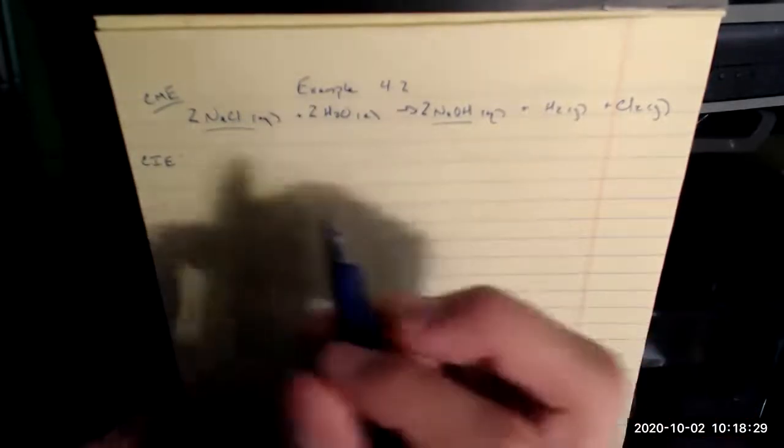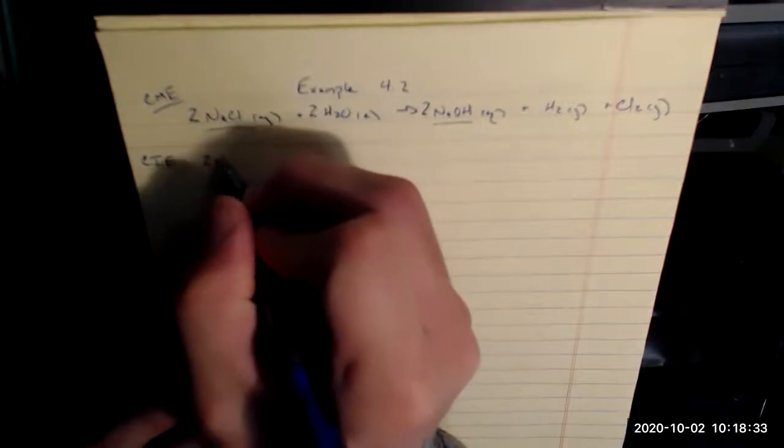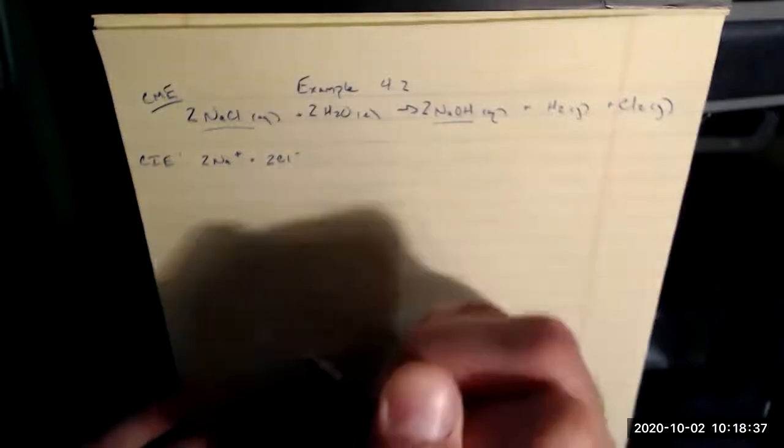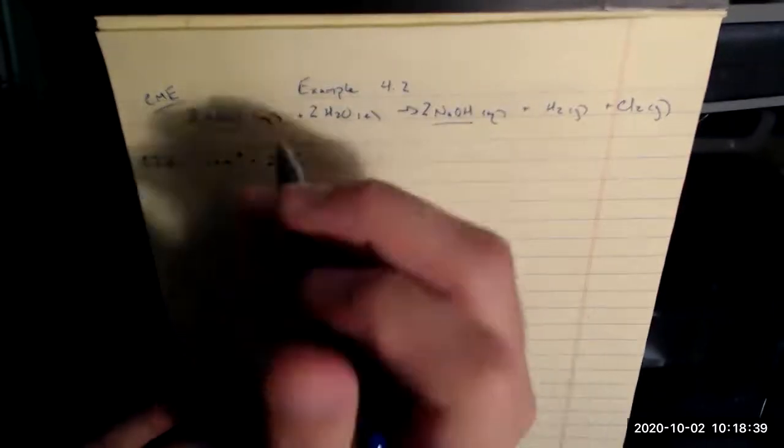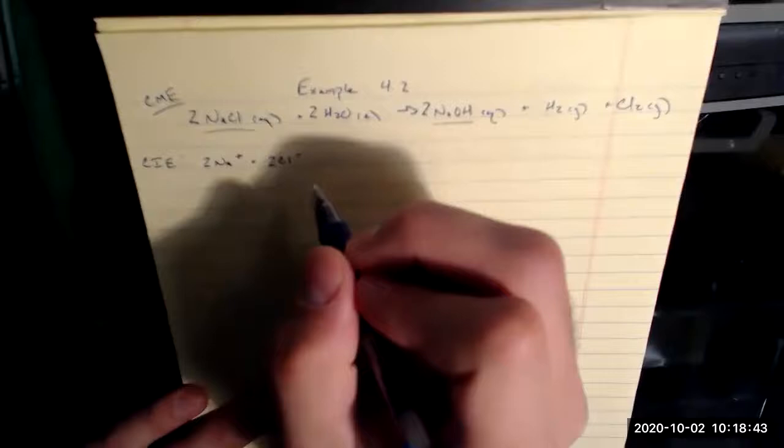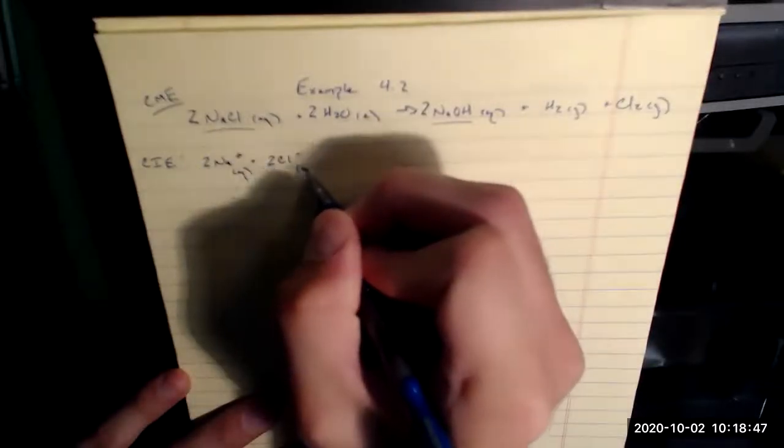So I split that up into its ions. Two NaCl means that breaks up into two Na plus and two Cl minus, because it was two NaCl units, so it splits up into Na plus and Cl minus, and there are two of them, and those are aqueous, just like its predecessor.